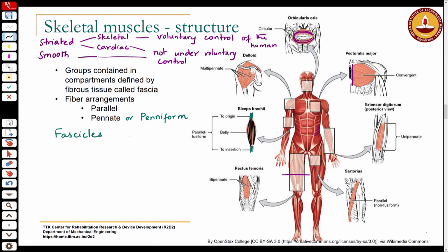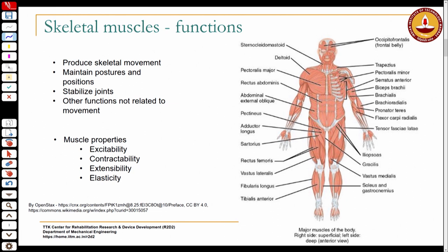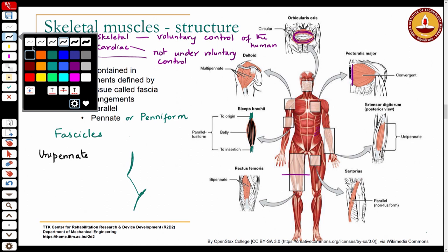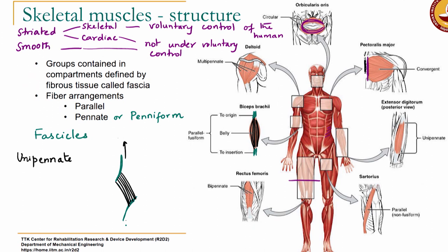The penniform or feather-like arrangement - there are three types. You could have a unipennate arrangement, where you may have a tendon on each side, and the muscle fibers run at an angle between the two tendons, relative to the direction of pull. The tendon will be pulling on the bone it is attached to, but the muscle fibers are at an angle to the tendons.